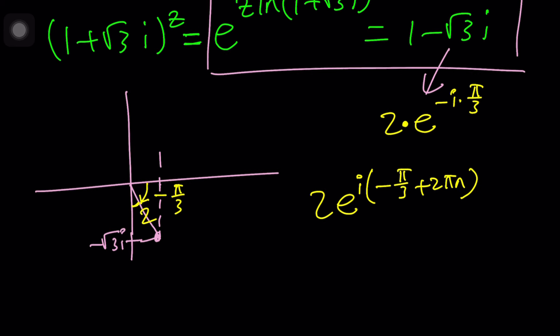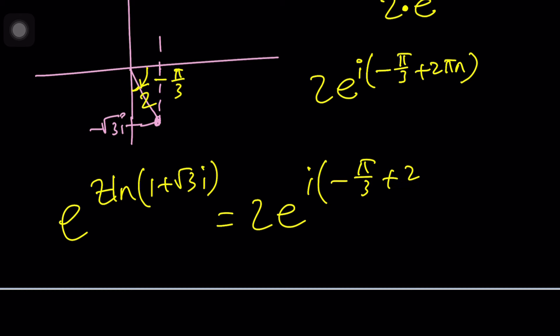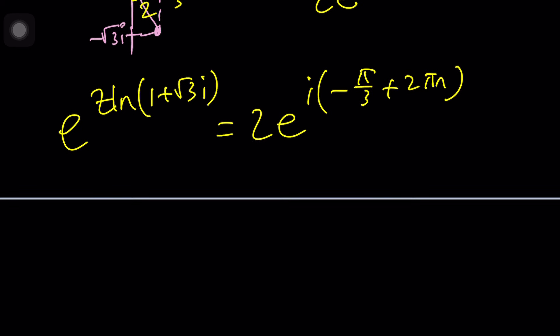And now we can go ahead and set these equal to each other e to the power z times ln 1 plus root 3i equals 2 times e to the power i times negative pi over 3 plus 2 pi n. But wait a minute. We haven't done the natural log here. So let's do that next. How do you find ln of this number? ln 1 plus root 3i is just going to be ln 2, because that's the absolute value, plus i times. If you think about this, you're going to get pi over 3 from here. That will be the principle value of the argument.